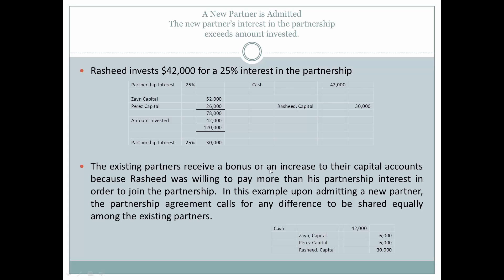The existing partners receive a bonus — an increase to their capital accounts — because Rashid is willing to pay more than his partnership interest to join. The partnership agreement in this example calls for any difference to be shared equally among the existing partners, though it could also be based on capital balances or an agreed-upon ratio. The $12,000 difference is shared equally between Zane and Perez, whose capital accounts are credited for this bonus.